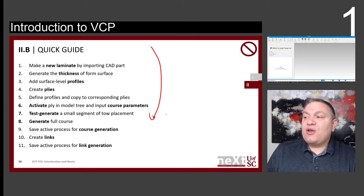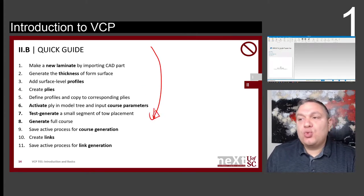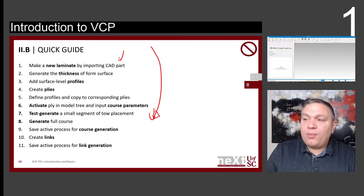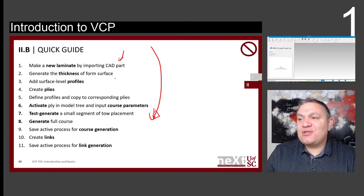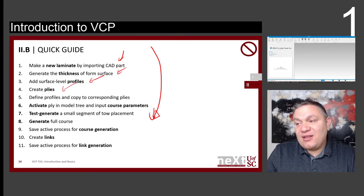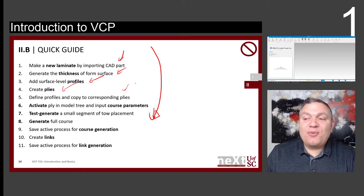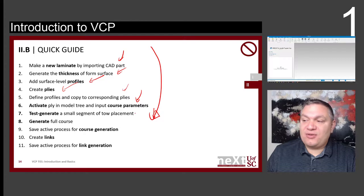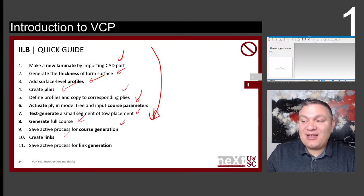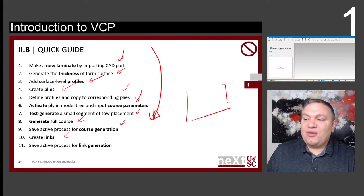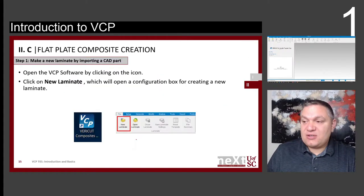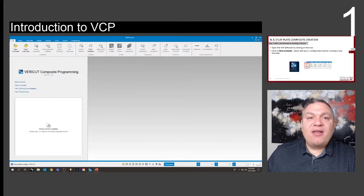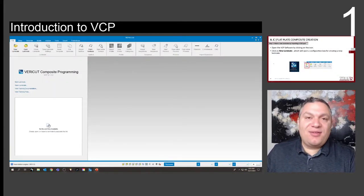This slide shows a quick guide of the process you'll always have to follow. You'll always import a CAD surface for a new laminate, generate the thickness, add surface-level profiles, create plies, define profiles, copy them around, activate and input course parameters, test, generate a full course, set active process, and create links — defining how you come to the part and how you leave — then save the active process.